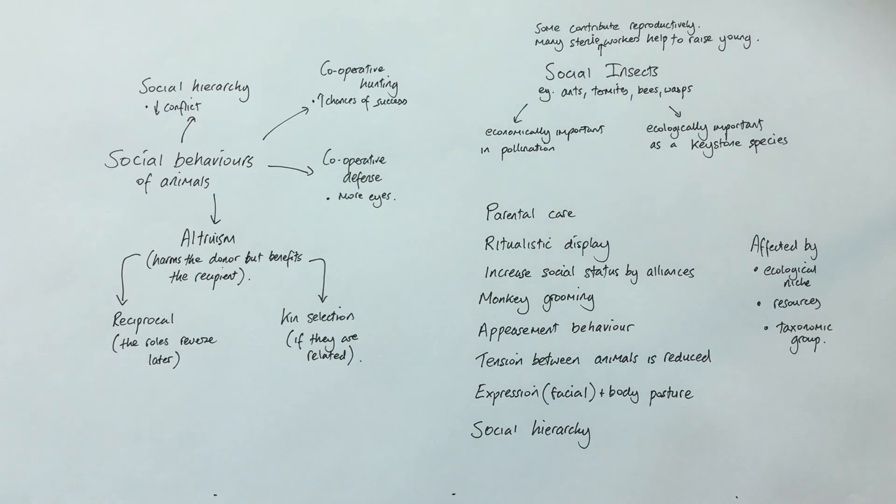Appeasement behaviour is a behaviour that an animal will carry out in order to prevent conflict with a more dominant animal. So they're trying to show respect to the more dominant animal by displaying appeasement behaviour. This therefore helps to reduce tension between the animals, which is an important thing within the social hierarchy.